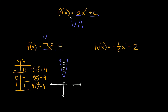When graphing parabolas in this form — ax squared plus c — the plus c part tells you where the y-intercept is and also where the vertex is. Here we have positive 4, so our vertex is at y equals 4, meaning the vertex is at the point (0, 4). The axis of symmetry is a vertical line running straight through the vertex, right here at x equals 0.